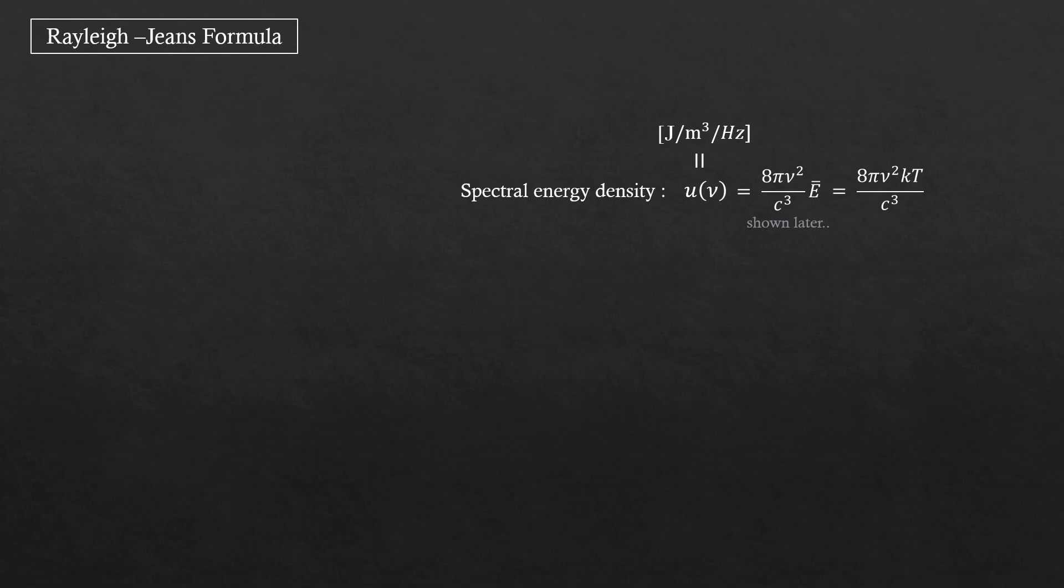Now, try to plot this as a function of frequency. It'll be a quadratic function since we have nu squared here, right? Here comes the biggest problem now. You remember we said black body emits radiation at all frequencies? Then what is the total energy density in the black body?